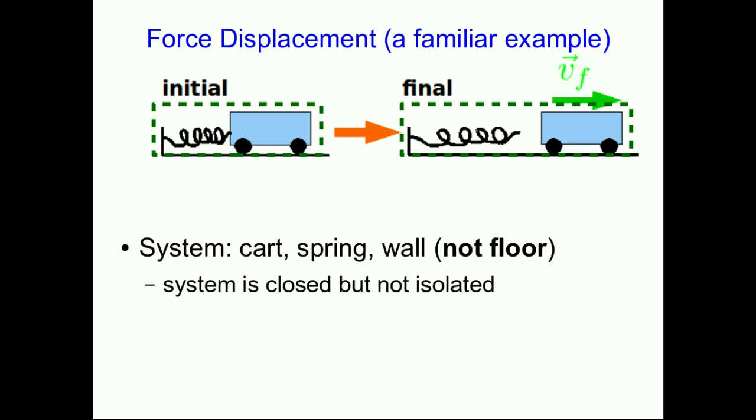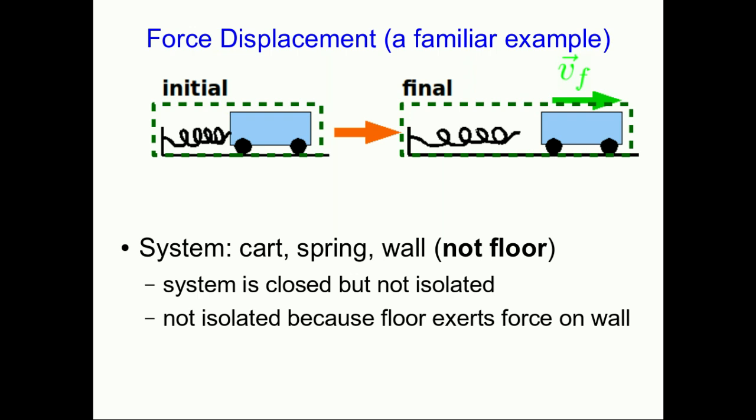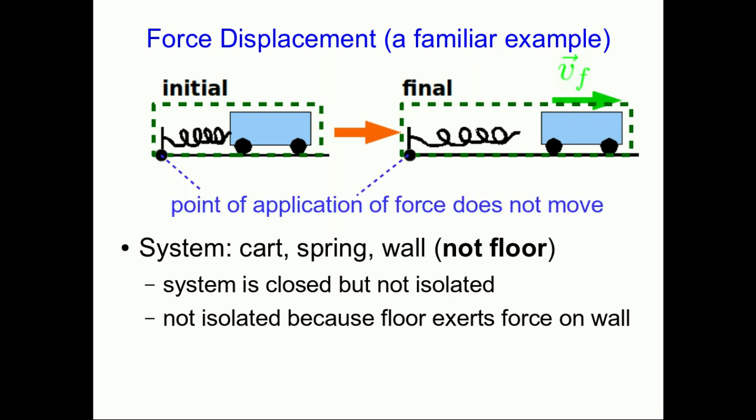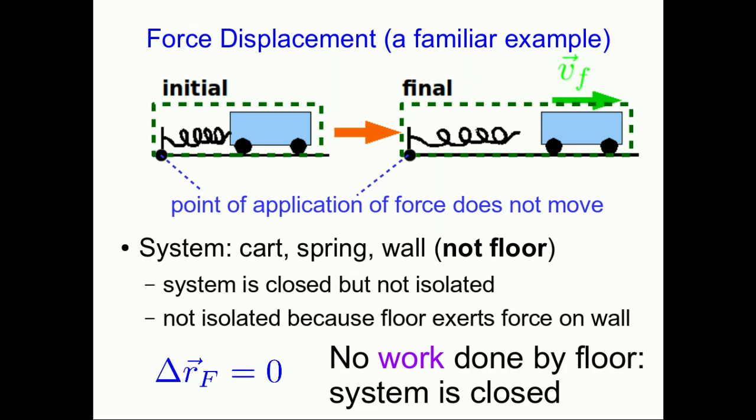Here's a cart being launched using a spring, and the system is the cart, spring, and wall but not the floor. We've already discussed that this system is closed but not isolated — it's not isolated because the momentum changes. Now we have an easier way of thinking about it: the floor exerts a force on the wall, but the point of application of that force does not move. So the force displacement is zero, that force does no work on the system, and that's why the system is closed.